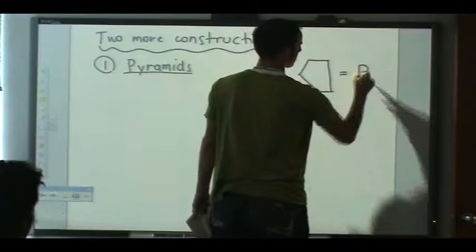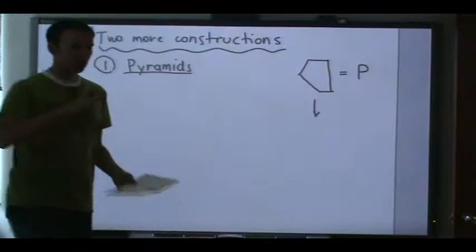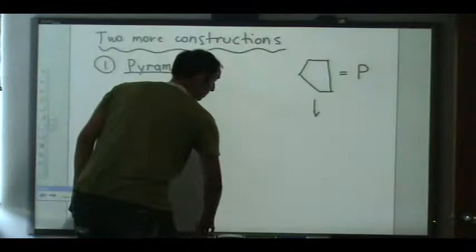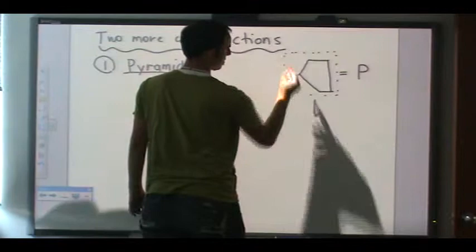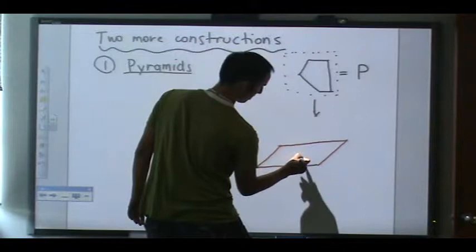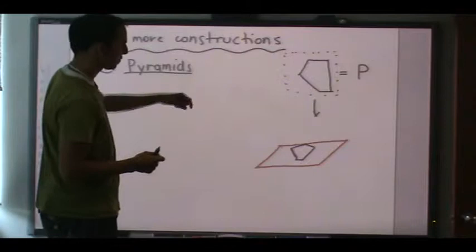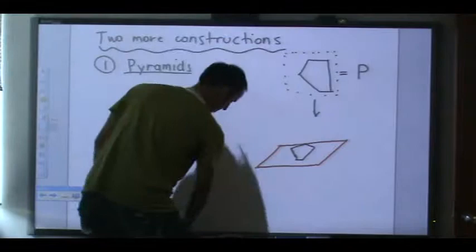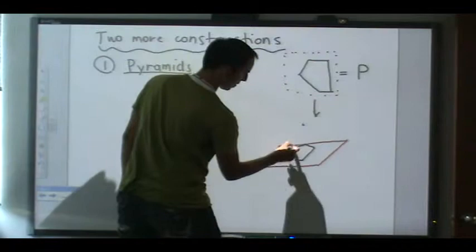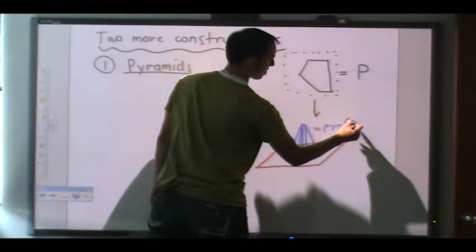So for example, if I want to consider this polytope and make the pyramid of that, what I do is take this polytope and think of it as living in one dimension higher — maybe think of this plane as living in three dimensions. Then you put a point on top, connect it with everything else, and this is what we call the pyramid of T.